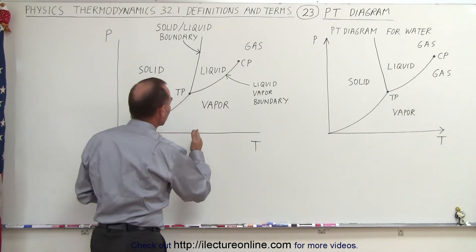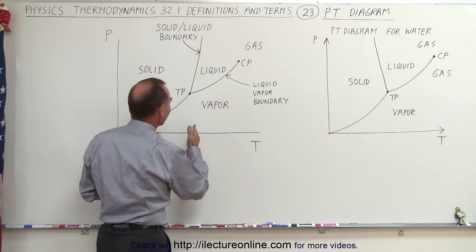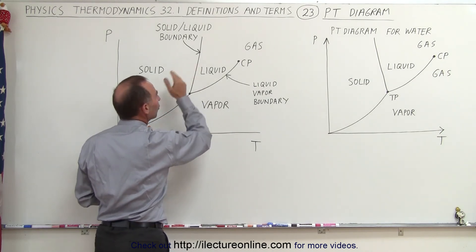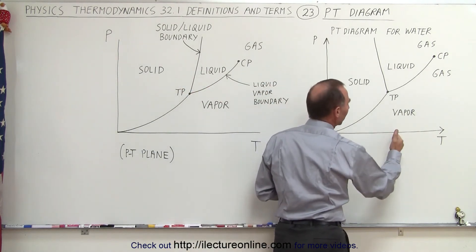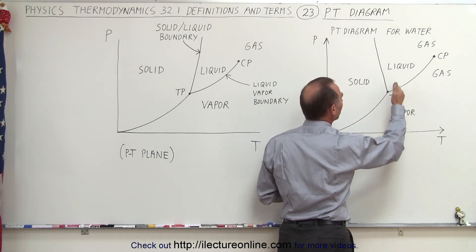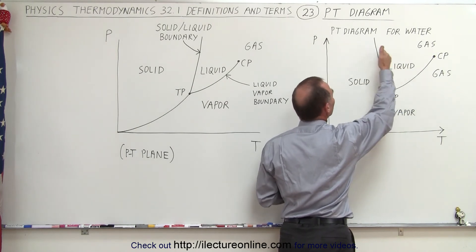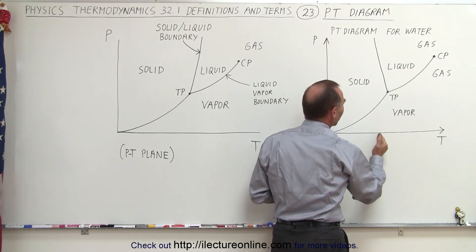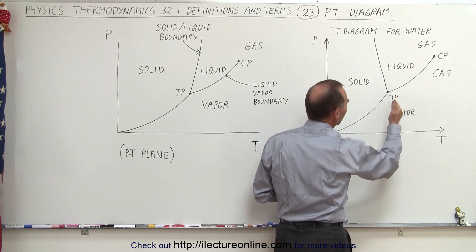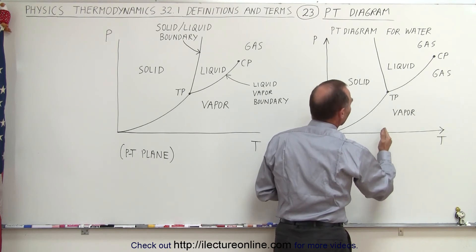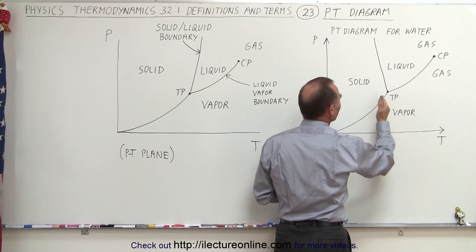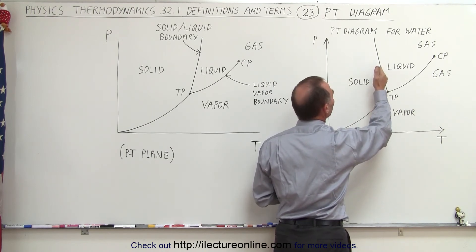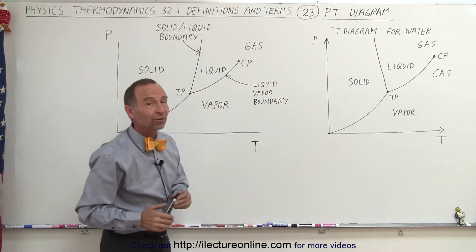Notice how different this is. For water, you can go from vapor, apply enough pressure to turn it into a liquid, then apply more pressure to turn it into a solid — but that cannot happen for other substances above the triple point temperature. If you apply enough pressure to a vapor in those cases, it will turn into a liquid, and applying additional pressure will never turn it into a solid — it will continue to be a liquid. Only if you're to the left of the triple point temperature can vapor be compressed into a solid, and then additional pressure will turn that solid back into a liquid.